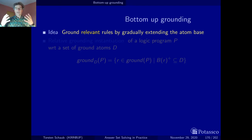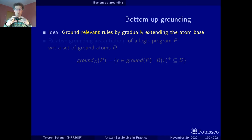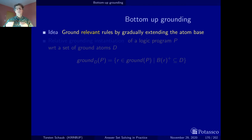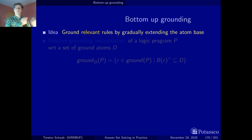We start with a set of facts, and keep in mind that we use safe rules. This means all variables are in the positive body literals. We then look whether the positive body literals of a candidate instance of a rule are in the atom base. If this is the case, this is a relevant instance and we add it to our ground instantiation.